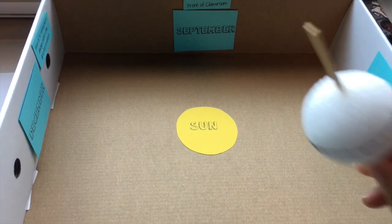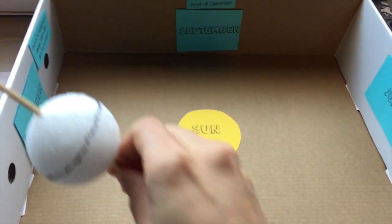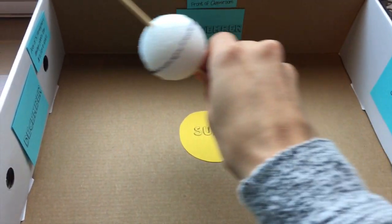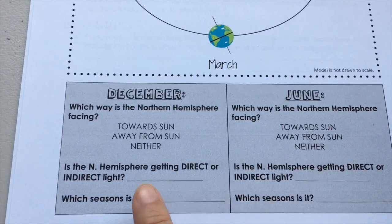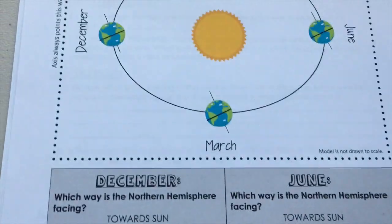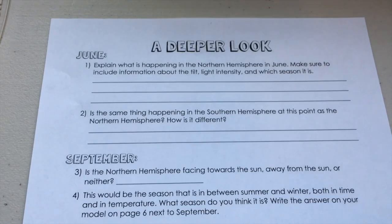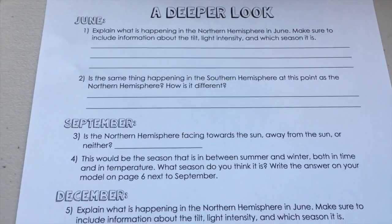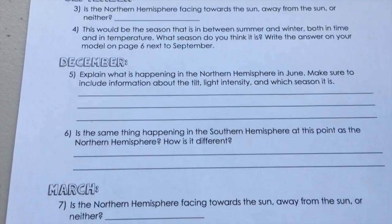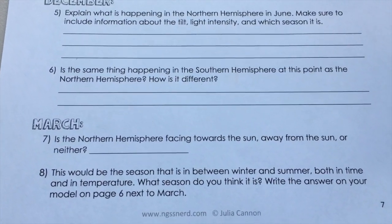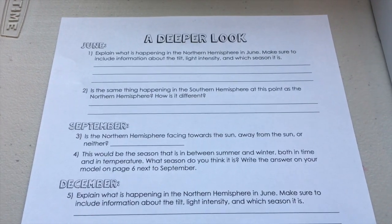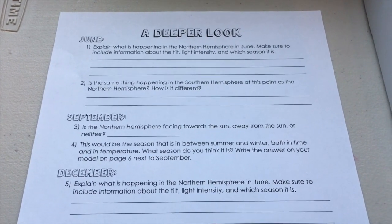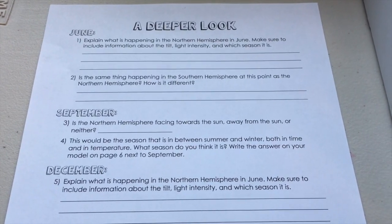For the physical model, you'll go around the room two different times to show the orbit twice. The first time, focus on just June and December and some basic questions. The second time, using Worksheet 7, you'll take a deeper look to start incorporating what's happening in March and September and also the southern hemisphere, although the focus will still be on the northern hemisphere in June and December.